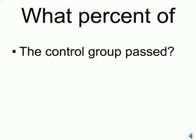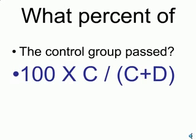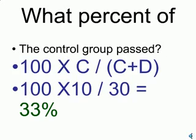What percent of the control group passed? Well, that would be 100 times C divided by C plus D, for 33%.